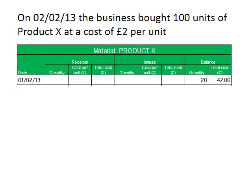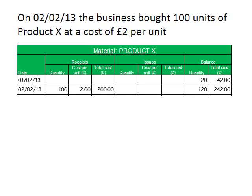On the 2nd of February 2013, the business buys 100 units of Product X at a cost of £2 per unit. So we're entering details into the receipts columns as well as the balance columns. We record the 100 units purchased, the cost per unit, and the total cost of £200. In the balance columns, we previously had 20 units, we've purchased 100 more, so we now have 120 units on hand with a total cost of £242.